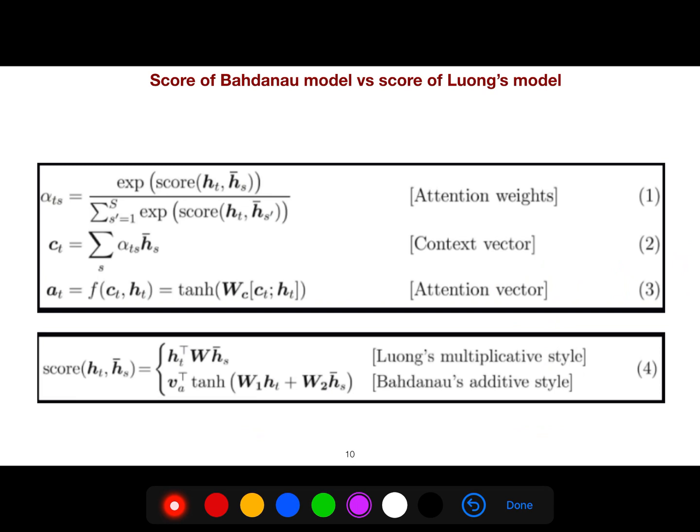So that's it, this is just an overview of the Bahdanau model, because we can also implement it using the other article that I mentioned at the beginning of this lecture, which is Luong's model. So in the Luong's model, we just do like this. It's an affine function. But in the Bahdanau approach, we use this.